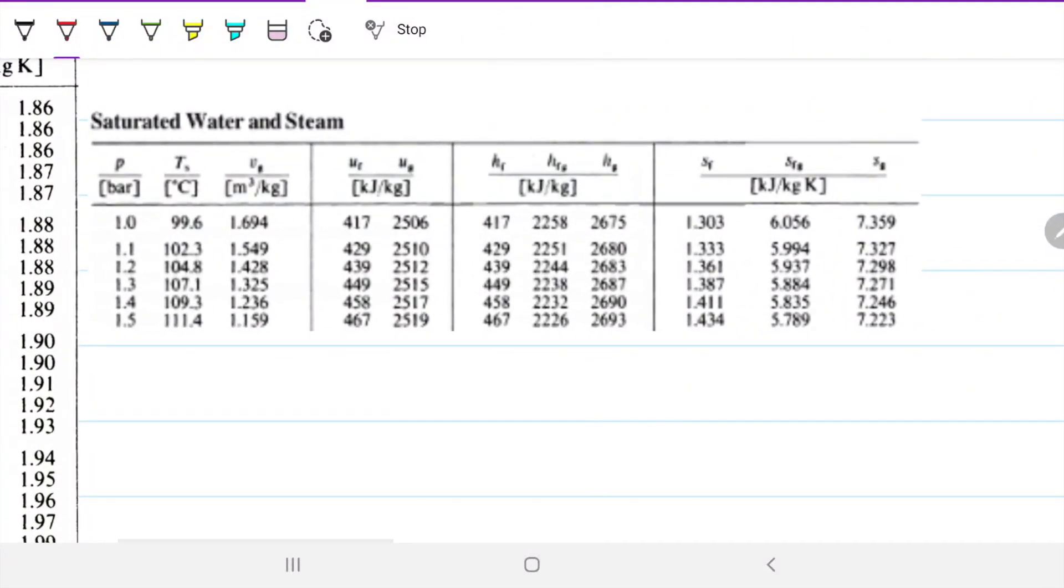On the other table, which is on page 10, we need to find again 100°C, and you'll see that we don't have 100°C. It's going to be between 99.6 and 102.3. So I'm going to have to interpolate to be able to grab that value.